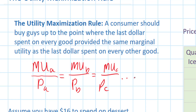If a consumer can equalize the amount of happiness provided by each dollar spent on every good, then there is no possibility for the consumer to increase his or her total happiness by changing the amount of any particular good that they consume.